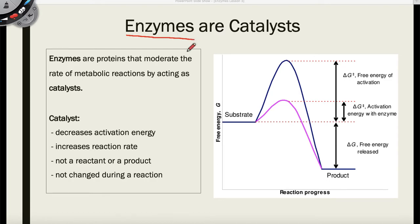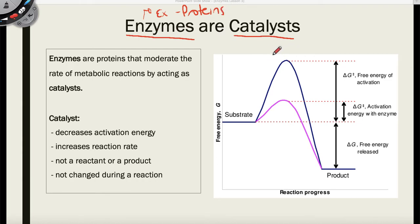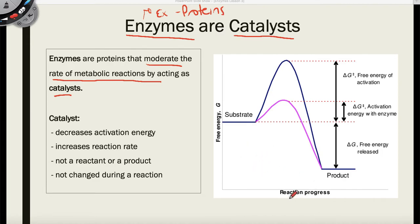So how do enzymes play a role in these chemical reactions? Enzymes are catalysts. Enzymes are proteins, and enzymes are also catalysts. They moderate the rate of metabolic reactions by acting as catalysts. Here's the reaction progress — we know that compounds called substrates, which are on the left side of the reaction, get turned into products.